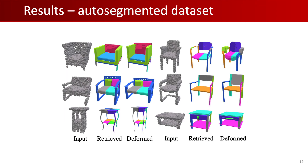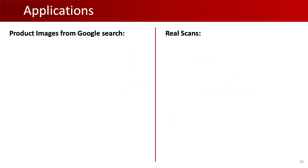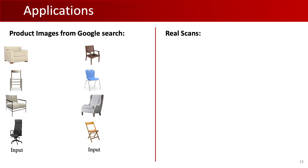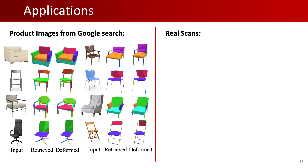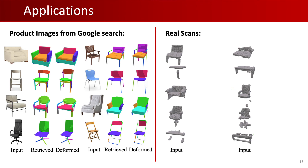As manual fine-grained part annotating is a tedious task, large databases of such models are scarce. We show that our approach works on automatically segmented models, such as those found in ComplementMe, enabling the use of our method on a wider array of source databases. Finally, we showcase applications of our pipeline, such as fitting to product images from Google Search, as well as to real-world scans.